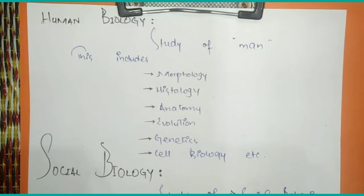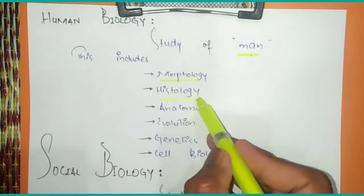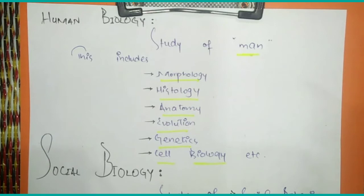The very next branch is human biology. Human biology is the study of man. The branch of biology which deals with the study of man is called human biology. This branch includes morphology, histology, anatomy, evolution, genetics, cell biology, and more.